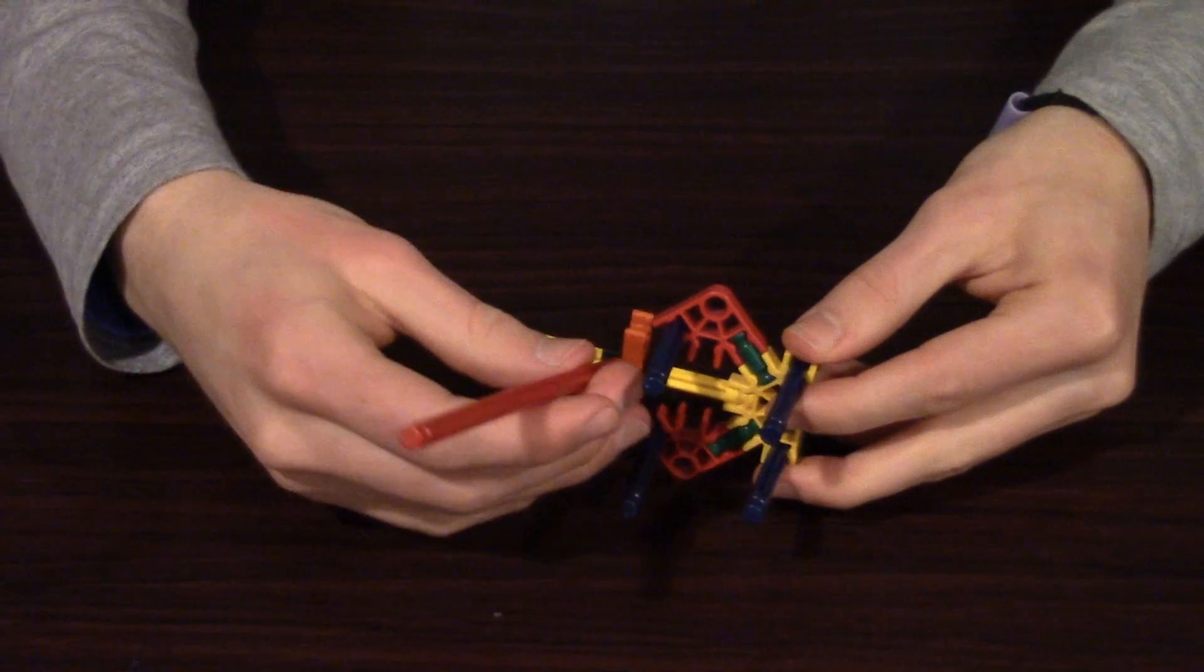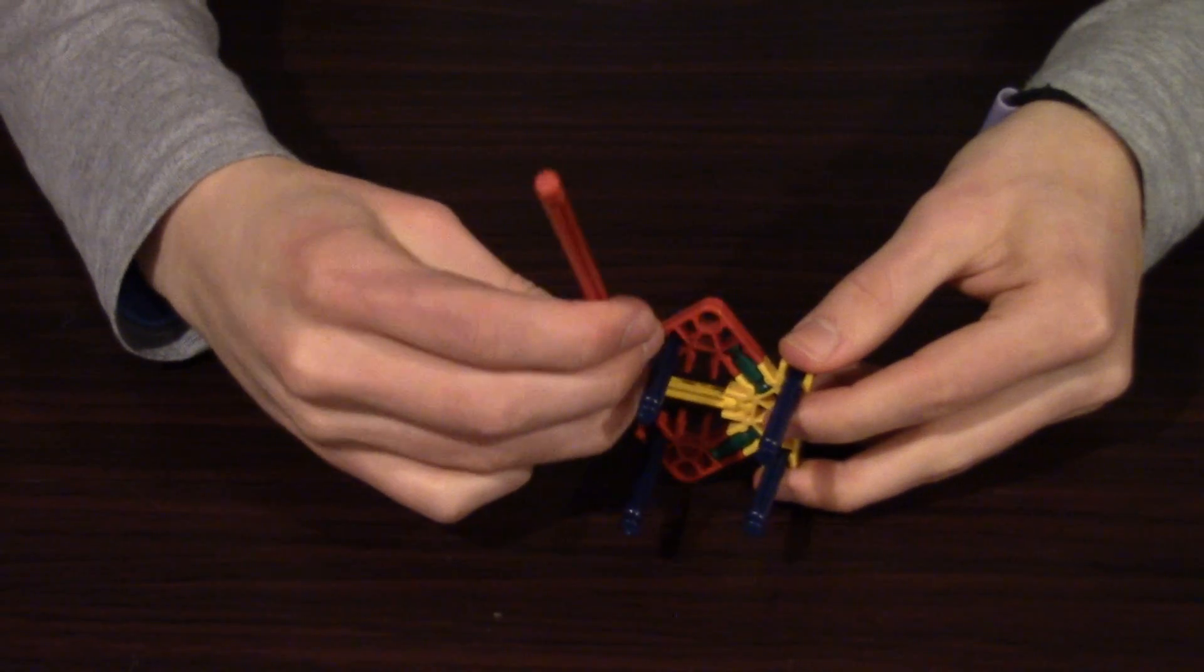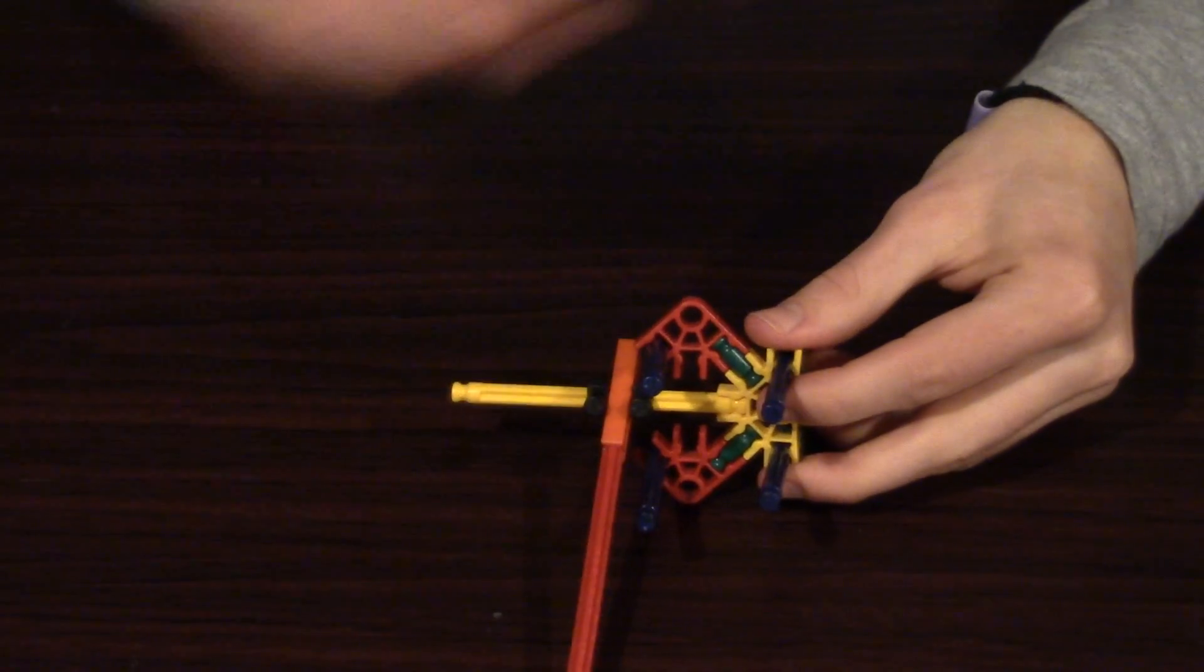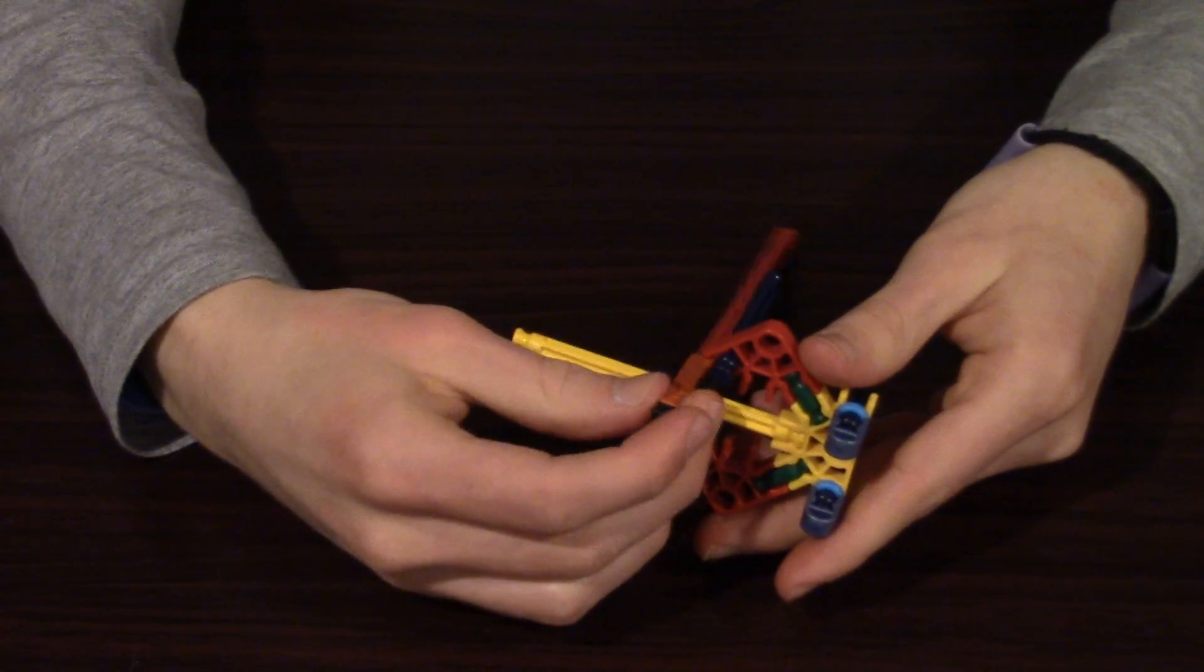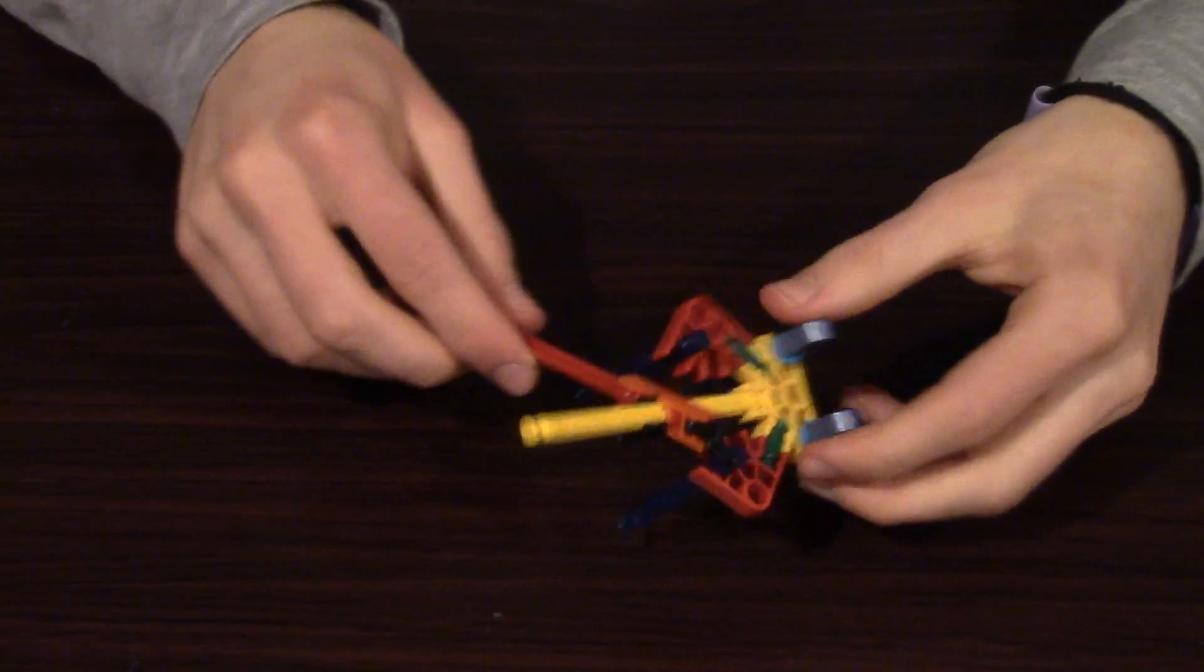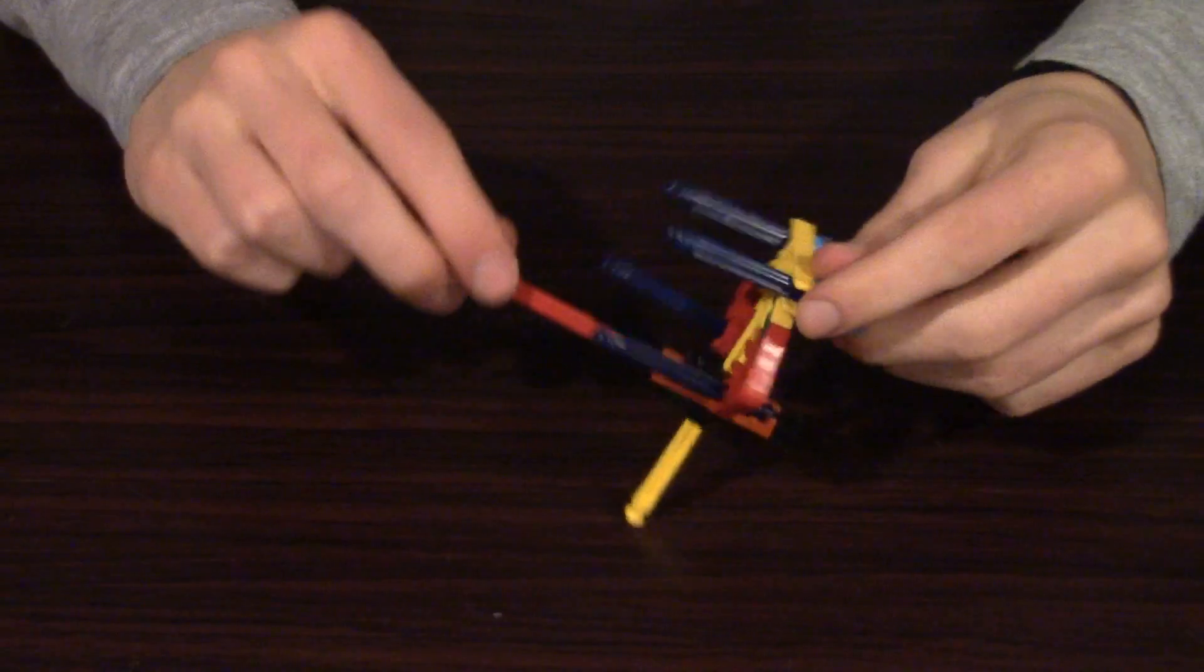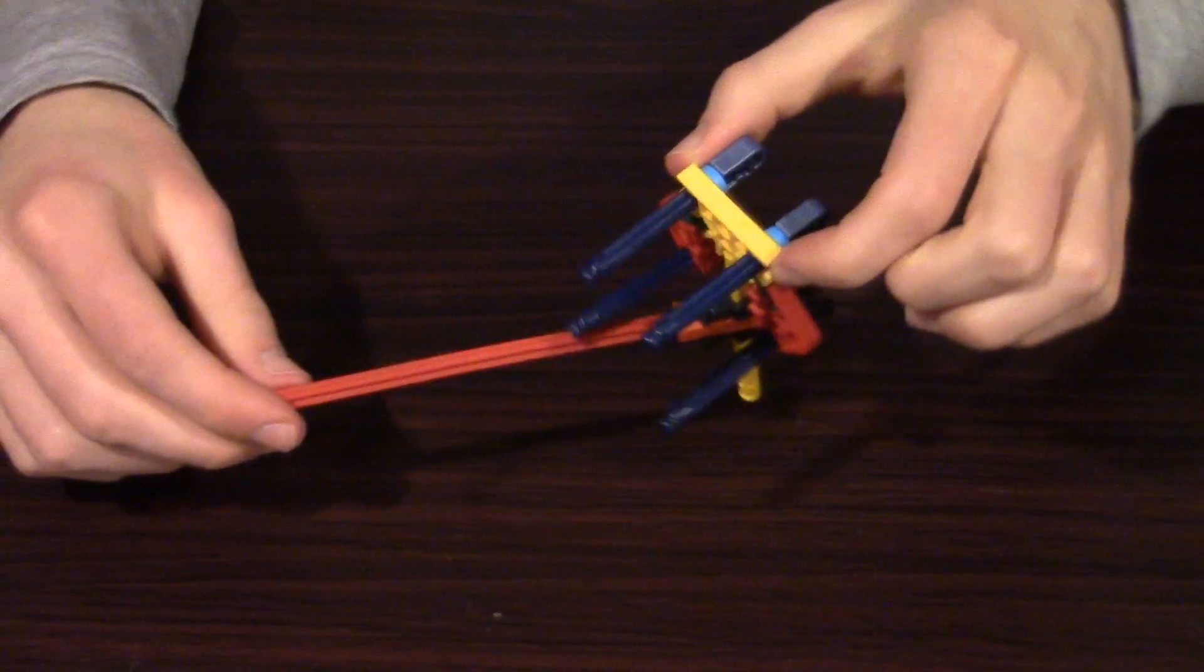Finally, put the long red rod on one end of the black, or one end of the orange connector, and the other final black piece on the other end. So now this whole thing should look like this.